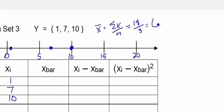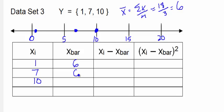Now the next step is to compute the deviations. So we take 1 minus 6 and we get negative 5, we take 7 minus 6 and we get a positive 1, and if we take 10 minus 6 we get a positive 4. Again these add up to 0 so we have to square each deviation.